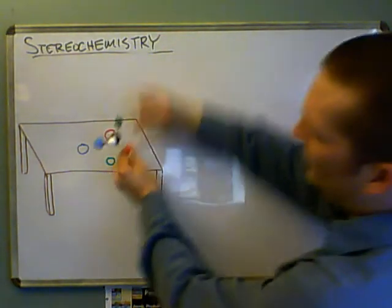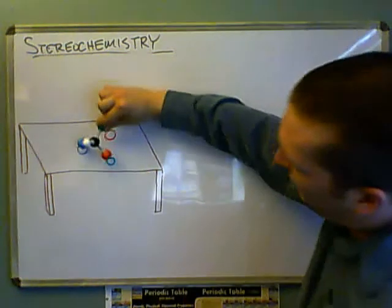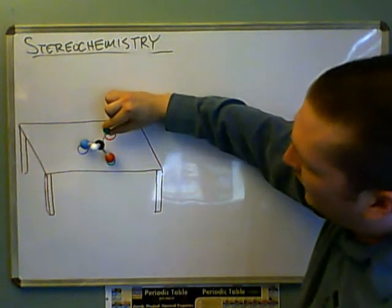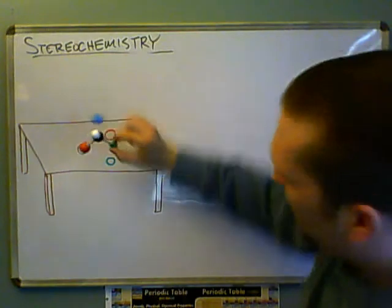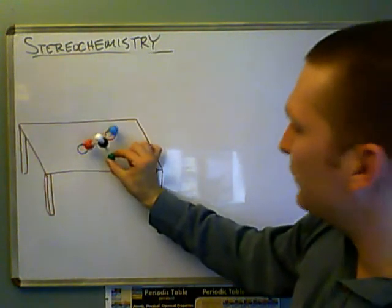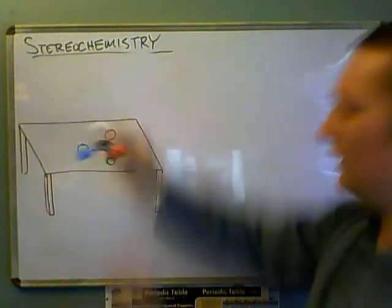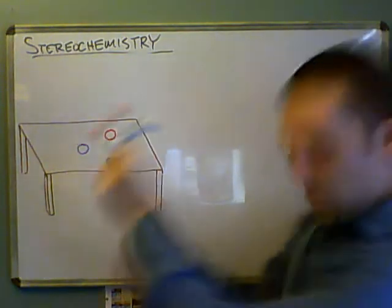Well, what if we rotated it? If I try to put the blue to go into the blue, well, now the green and the red aren't lining up. If I try to put the green in, now the blue and the red aren't lining up. And there's just no way you could do it.